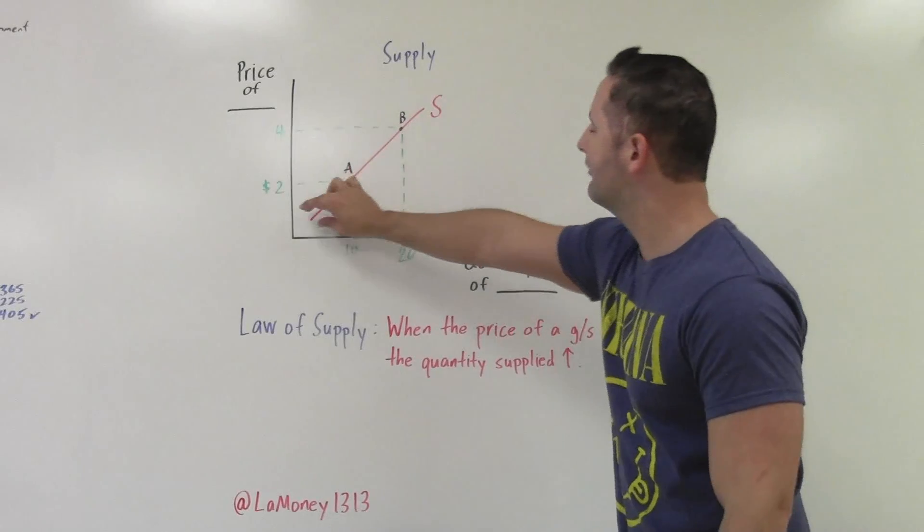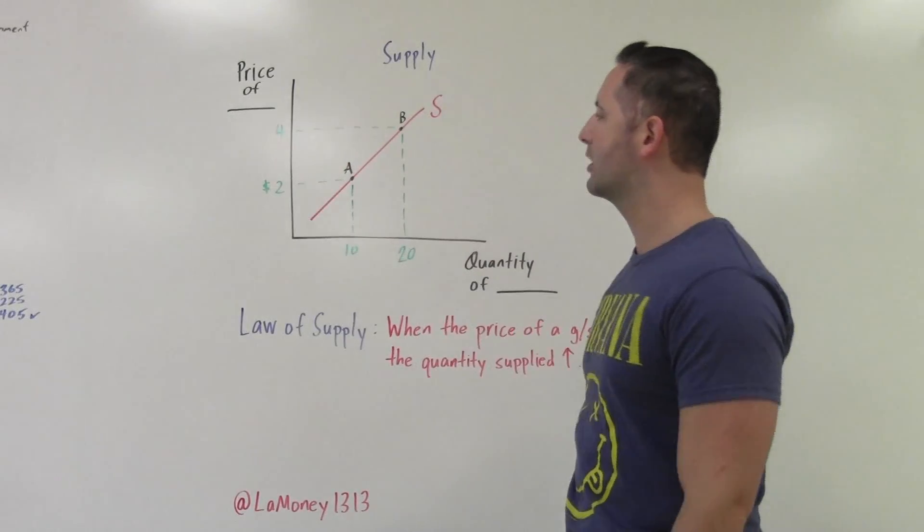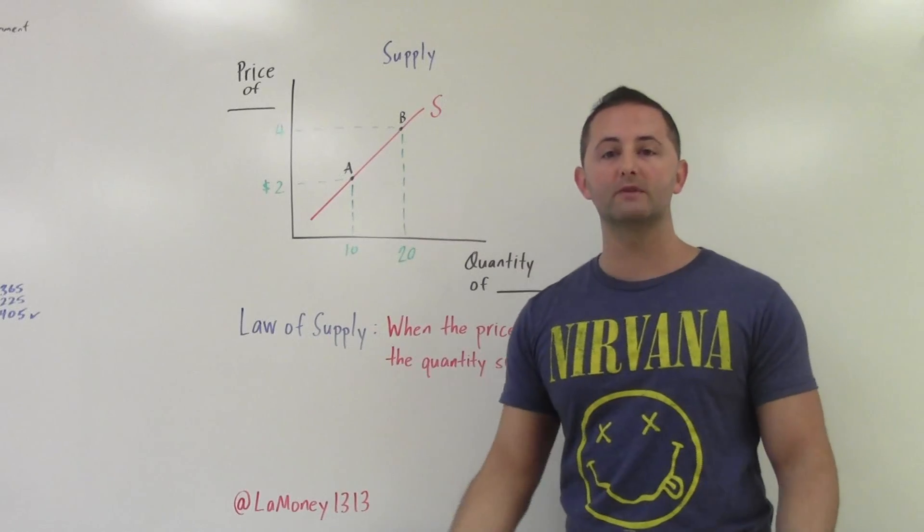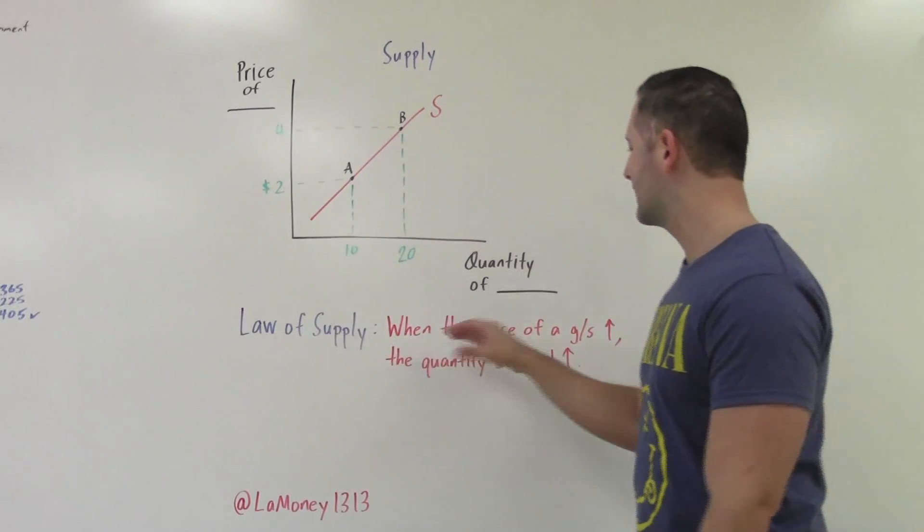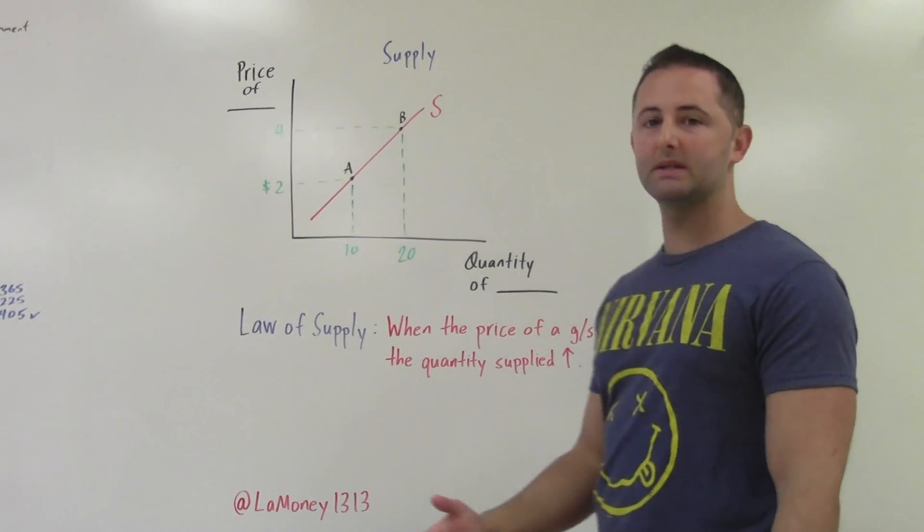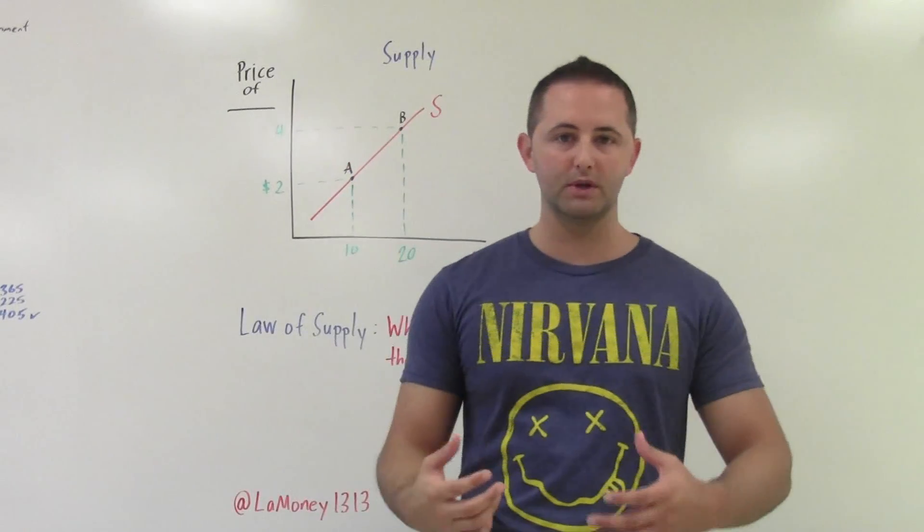Because we notice here we have an upward sloping supply curve, positively sloping, and that goes along with the law of supply. The law of supply says that when the price of a good or service increases, the quantity supplied also increases.